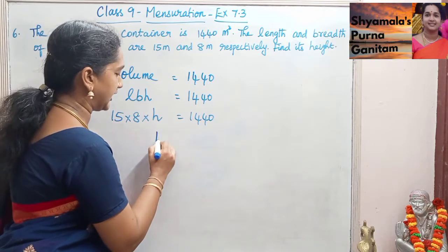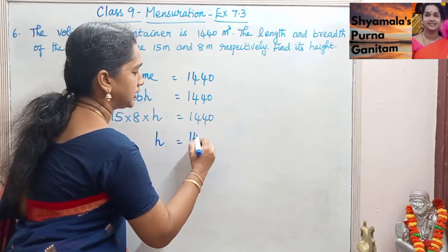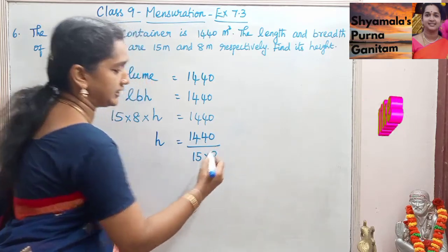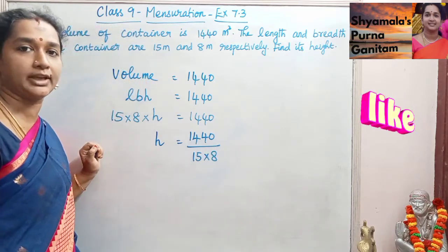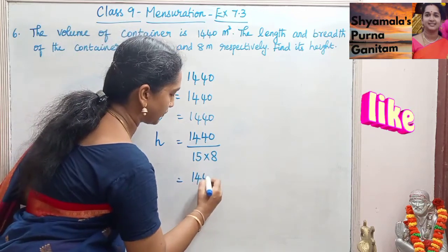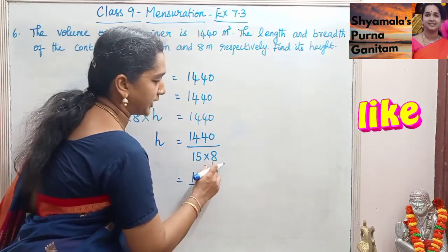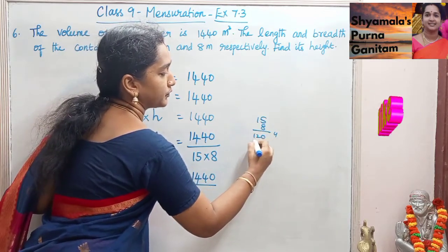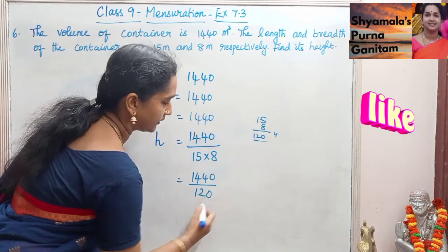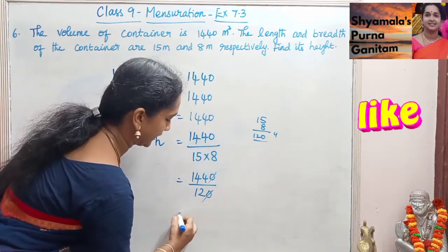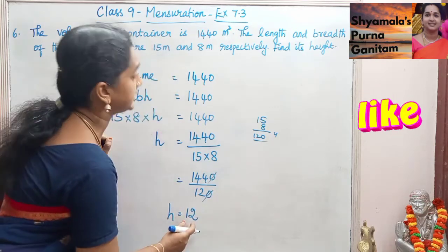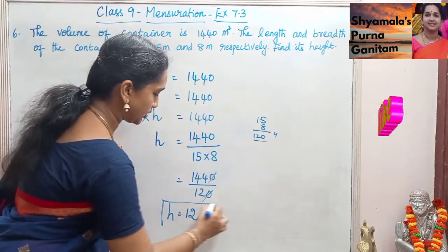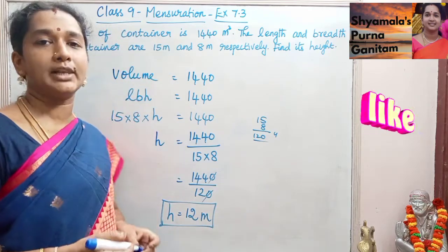If we simplify this, we will get the H value. H is equal to 1440 divided by 15 into 8. The numerator 1440 divided by 15 into 8 gives 120. The zero will get cancelled, so the height we got is 12 meters. Height is equal to 12 meters.